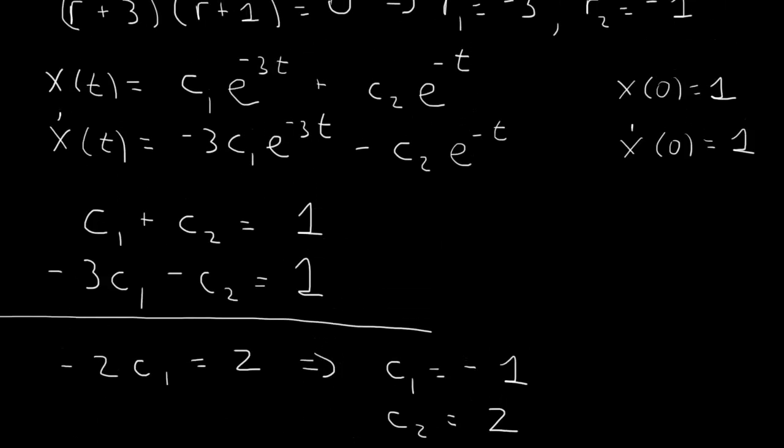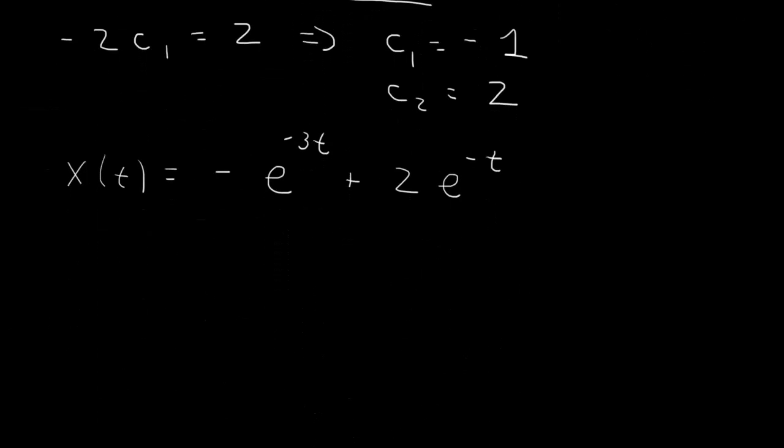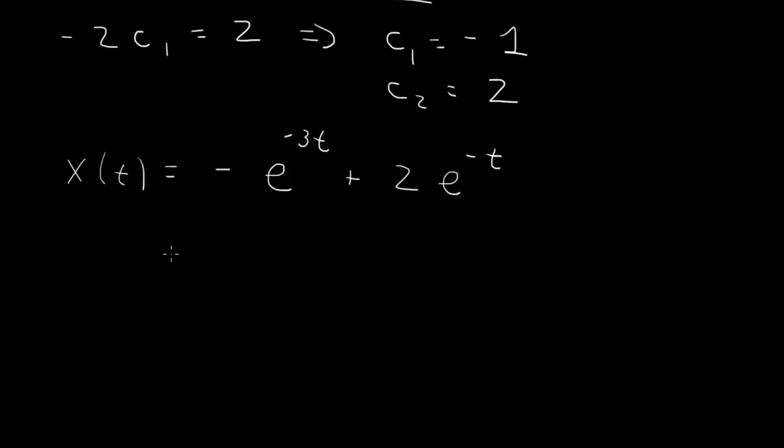That's our solution. If we wanted to simplify this, this one decays faster than this one. A simplification, or at least a nice way of writing it, would be to factor out the one that decays least slow, so that would be e to the minus t times 2 minus e to the minus 2t.